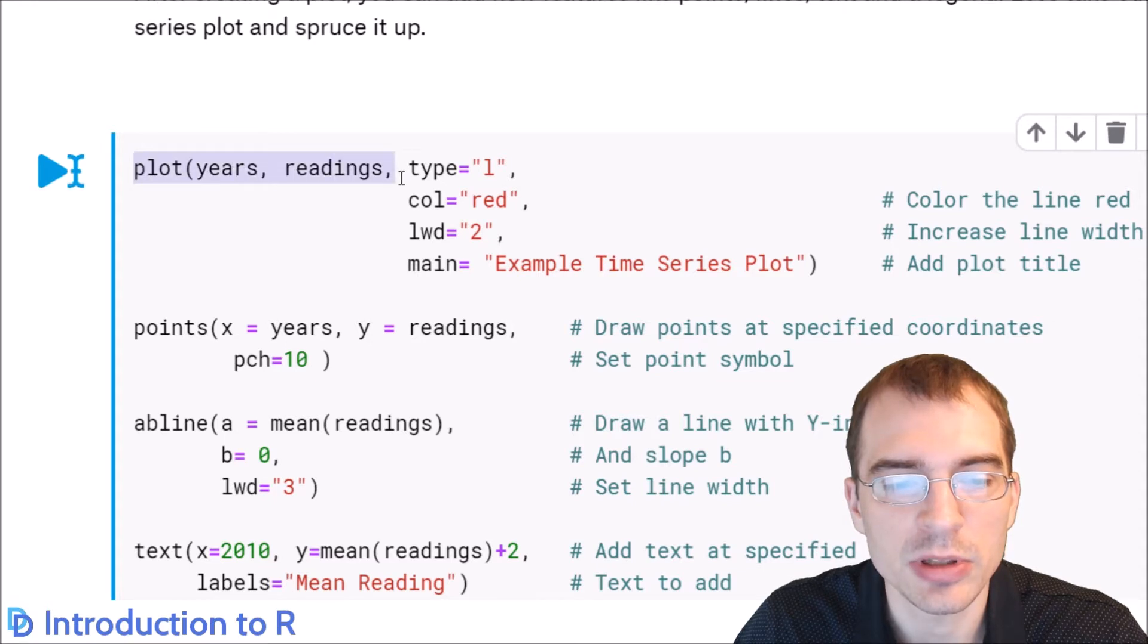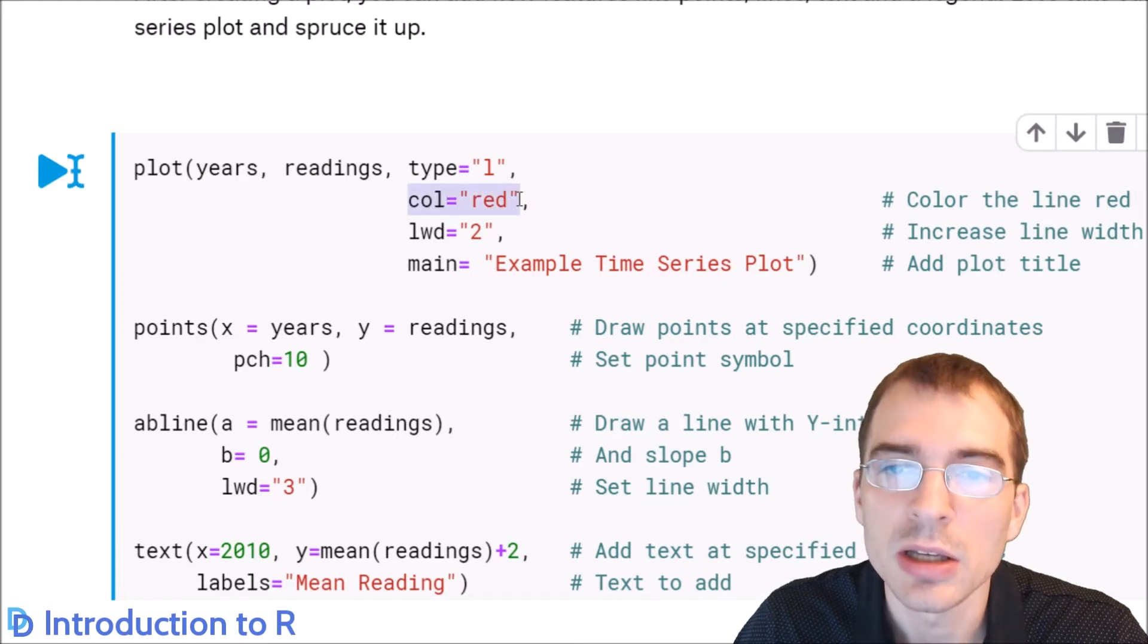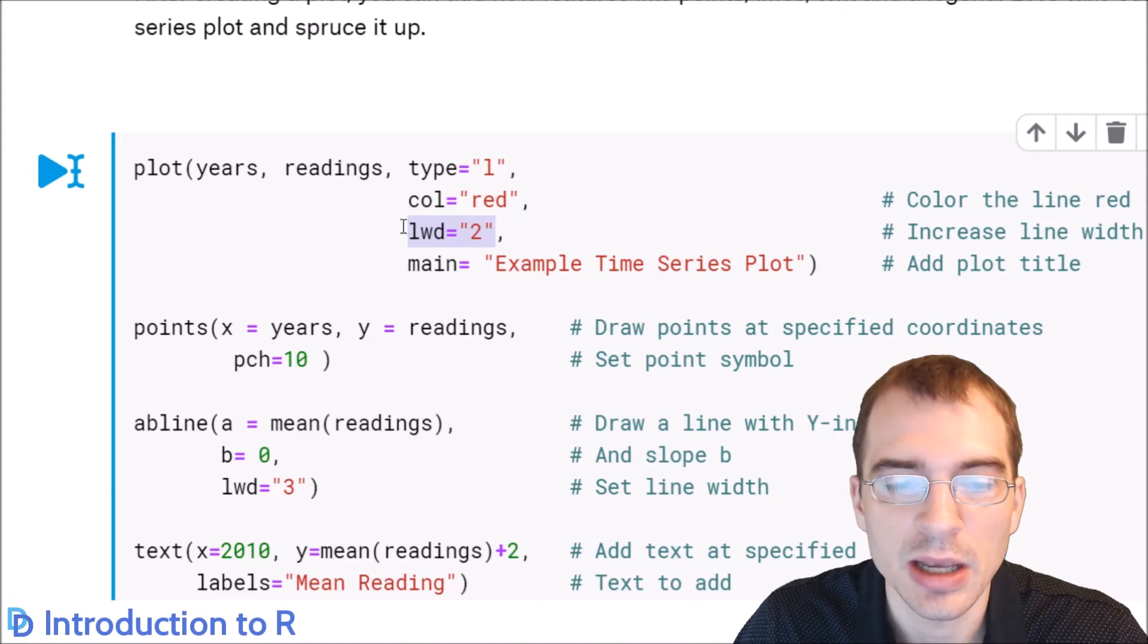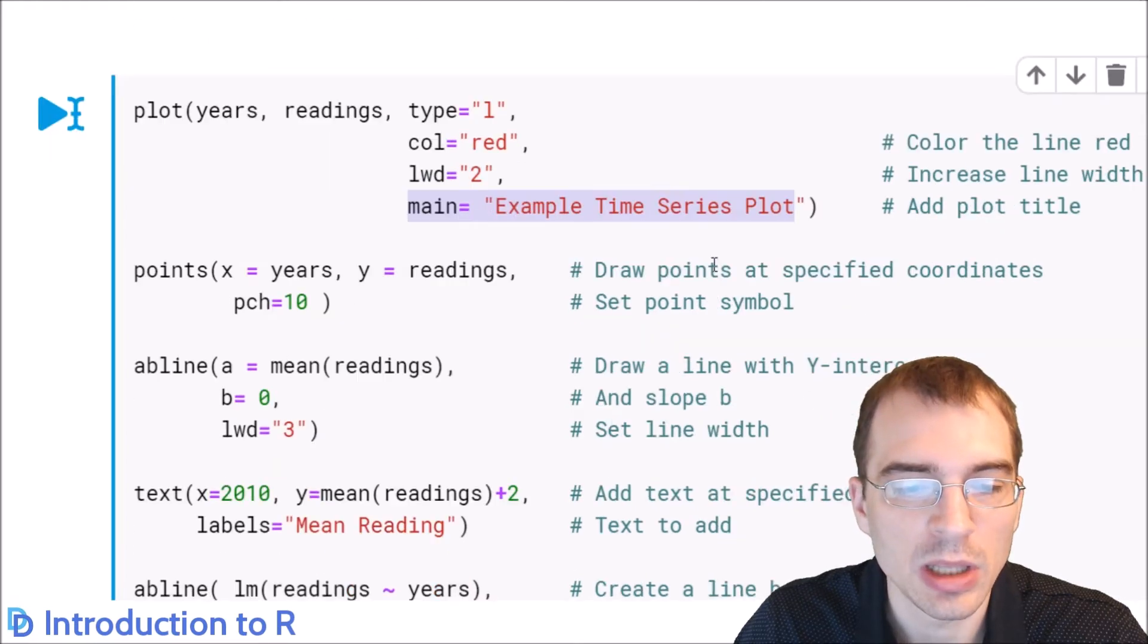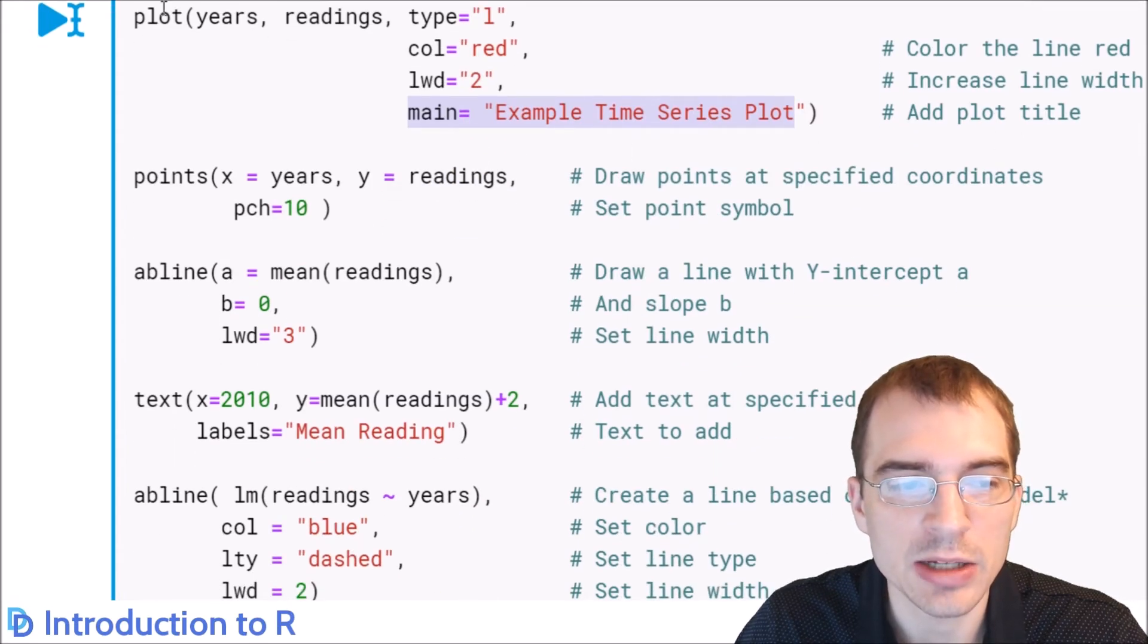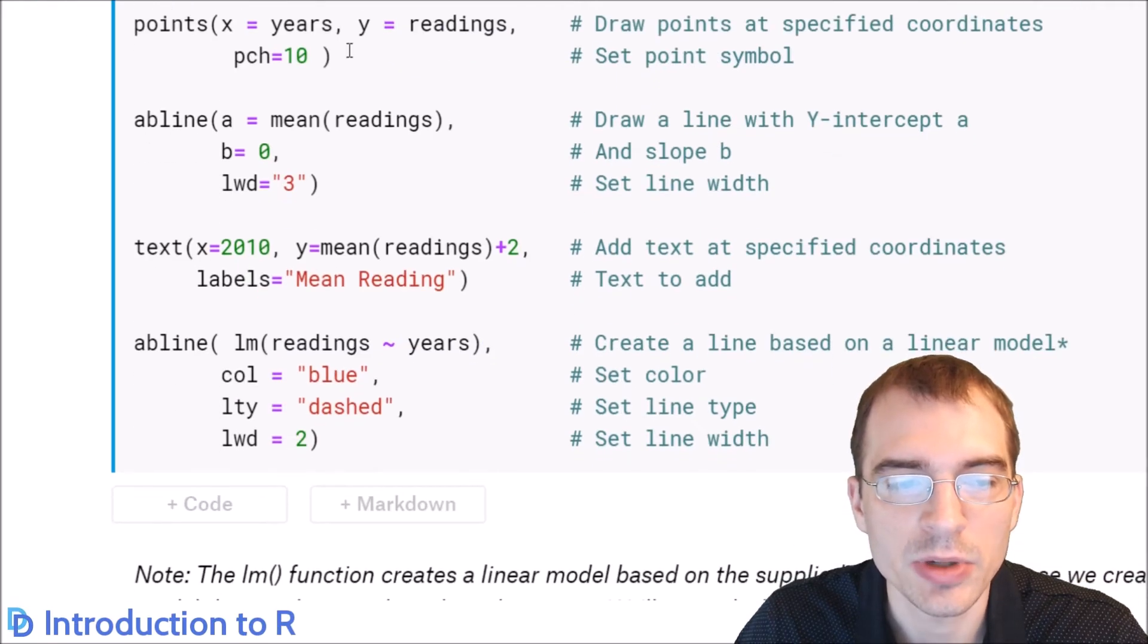So here we're going to recreate the line plot from earlier, but we're just going to spruce it up with some extra parameters and draw some extra things onto the canvas. So again, we're just recreating the plot with the years and readings. Type L means line plot. This time we're going to pass in col equals red. That'll change the line color to red. We're going to increase the line width by passing this LWD equals two. And we're also going to give it a title. And after creating this initial plot, which this call will do, we're going to add some extra things afterwards, essentially layering more things on top of the existing plot.